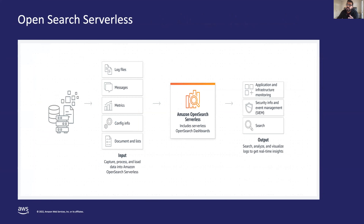Amazon OpenSearch Service makes it easy for you to perform interactive log analytics, real-time application monitoring, website search, and more. OpenSearch is an open-source service derived from Elasticsearch. Amazon OpenSearch now supports a serverless option, so as a developer you can use OpenSearch Serverless to run petabyte-scale workloads without configuring, managing, and scaling OpenSearch clusters. You get the same interactive millisecond response time as the OpenSearch Service with the simplicity of a serverless environment.